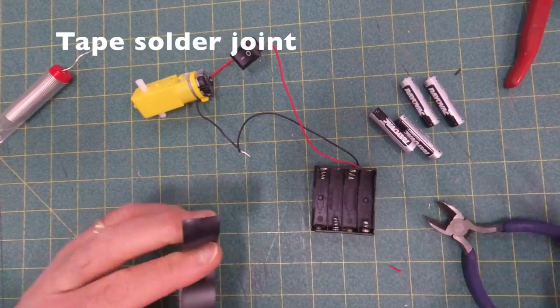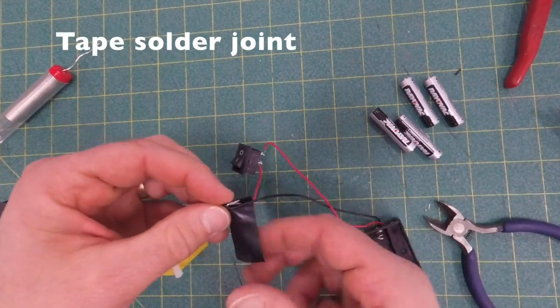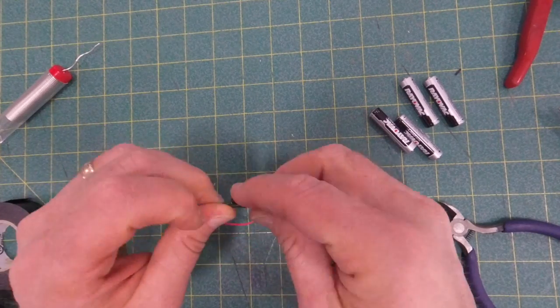And tape up that last soldering joint using electrical tape just to protect that joint. Once you're done with that, your circuit is done. Let's start attaching the legs.